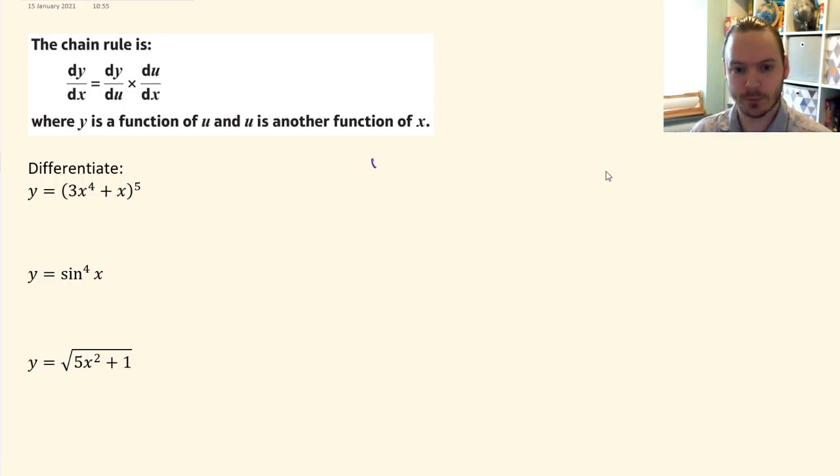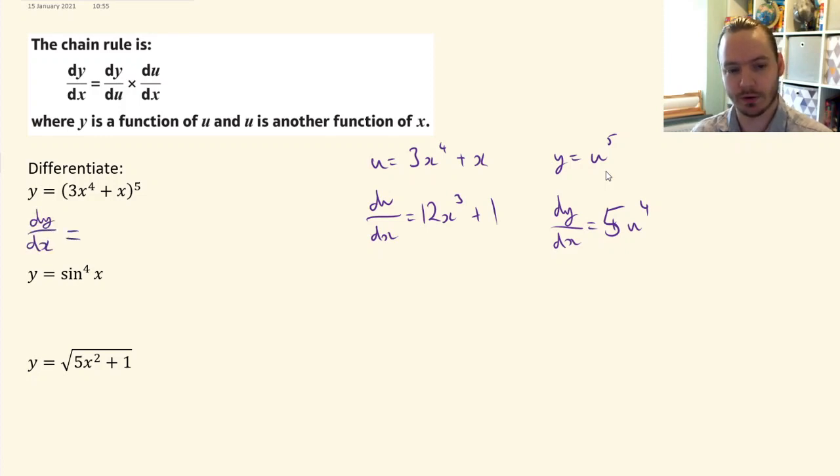For the first one, we'll say that u is 3x^4 plus x, which means that y is u^5. So du/dx is 12x^3 plus 1, and dy/du is 5u^4. Therefore dy/dx is dy/du which is 5(3x^4 + x)^4 multiplied by 12x^3 plus 1. We could expand and tidy up, but we'll just leave it there.